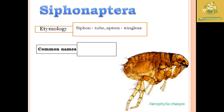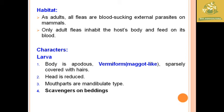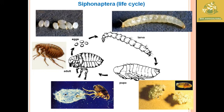Siphonaptera has a tube-like structure. These are warm-blooded animal parasites that suck blood — commonly known as fleas. They are wingless insects. As adults and in habitat, they are external parasites on mammals with blood-sucking nature. The larva is vermiform, covered with hair, with a reduced head and mandibulate mouthparts. The larva is a scavenger on bedding material. The life cycle is complete metamorphosis: larva, pupa, and adult.